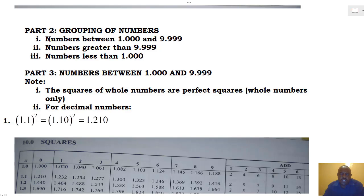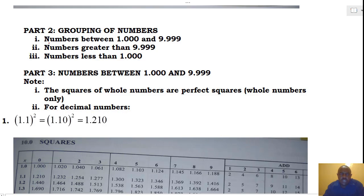The second part of the session will involve grouping the numbers to be considered into some categories. The first category is numbers between 1.00 all the way to 9.999. Number two is numbers greater than 9.999. And three, numbers less than 1.00.